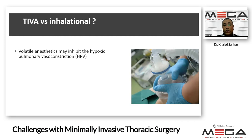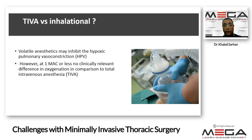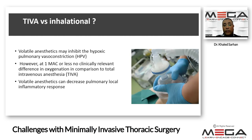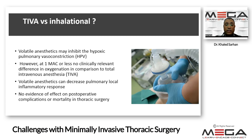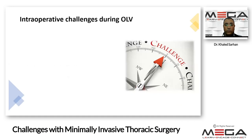TIVA versus inhalation: volatile anesthetics may inhibit hypoxic pulmonary vasoconstriction, which is a very important protective mechanism against VQ mismatching that occurs during one lung ventilation. However, at one MAC or less of volatile anesthetic, there is no clinically relevant difference in oxygenation compared to total intravenous anesthesia. On the other hand, volatile anesthetics can decrease the local pulmonary inflammatory response. However, there is no effect on operative morbidity or mortality when using TIVA or inhalation.